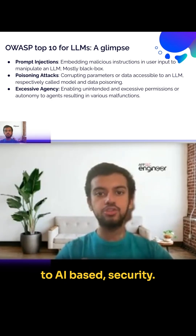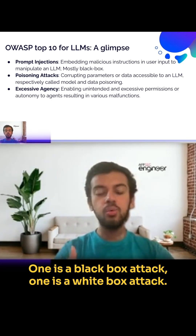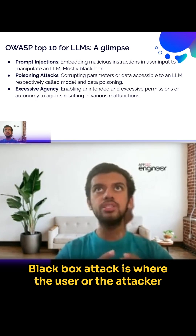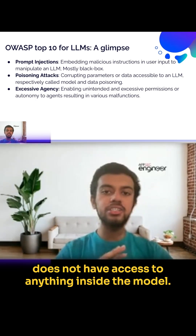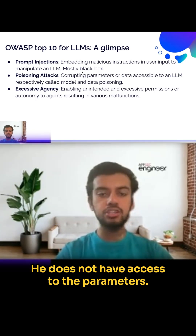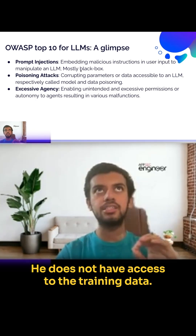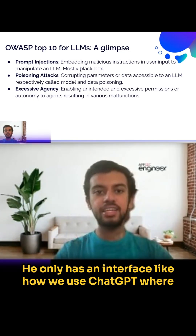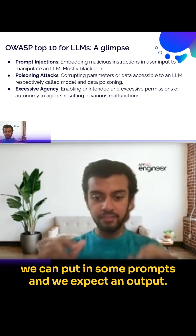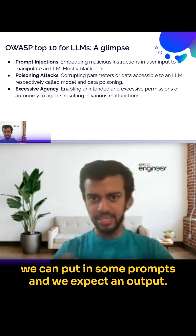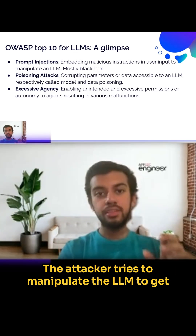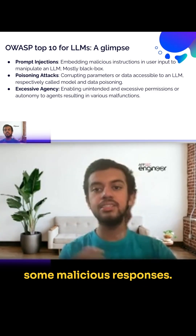There are two types of attacks in AI-based security: black box and white box. In a black box attack, the attacker does not have access to anything inside the model — not the parameters, not the training data, not the data stores. He only has an interface like ChatGPT where he puts in prompts and expects an output. The attacker tries to manipulate the LLM to get malicious responses.